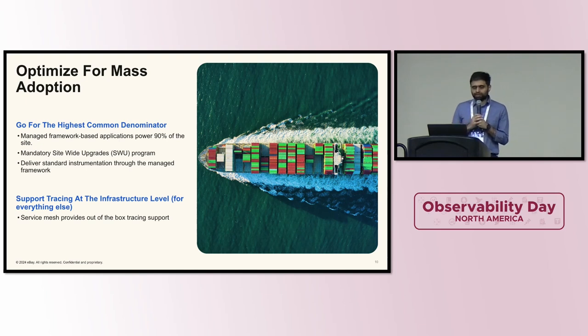Optimize for the mass adoption. In eBay, we have something called managed framework, especially for the Node.js and the Java. Any application built in Java and Node.js uses the managed framework. And 90% of what powers the eBay site is built using this managed framework. And we decided to ship the instrumentation through this managed framework. And this managed framework runs a program called monthly site-wide upgrades. It's mandatory. Every single application using the managed framework have to upgrade to the latest version of the framework every month. The best part of that is if we have any new instrumentation which we want to ship, or if we want to fix any of the existing instrumentation, within the next 30 days, it will have a turnaround. It will be shipped and all the application will be live in production having that feature.